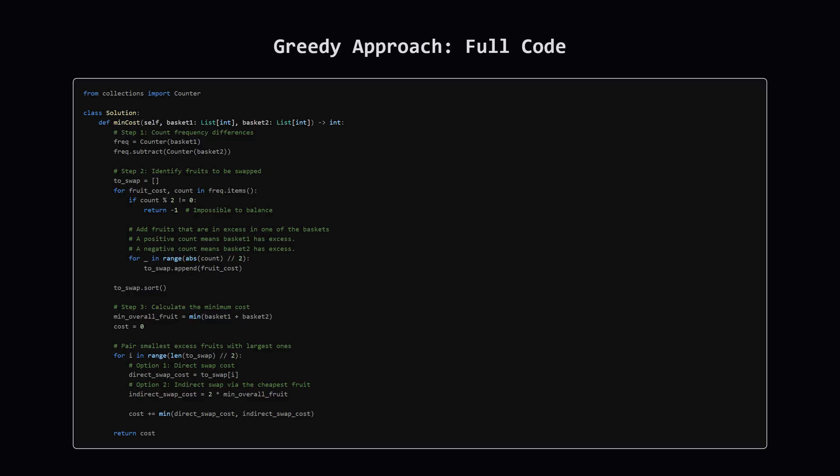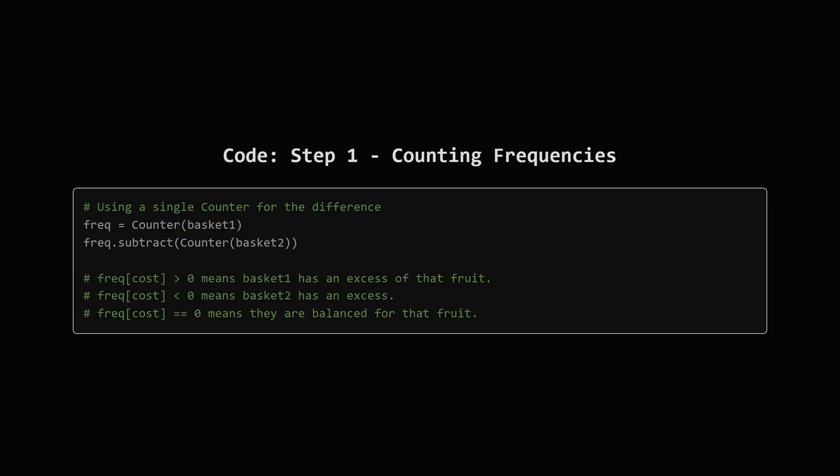Alright, here's the Python code that implements this strategy. It might look like a bit much, but it follows our logic exactly. We'll walk through it section by section, so it's perfectly clear. First, we use Python's counter to find the frequency difference in a really clever way. We create a counter from basket one, and then we tell it to subtract the counts from basket two. So, if a fruit cost has a positive value in our final frequency map, it means basket one has more of them. If it's negative, basket two has more. And if it's zero, the counts were already equal.